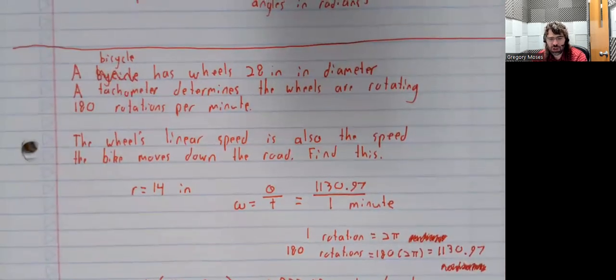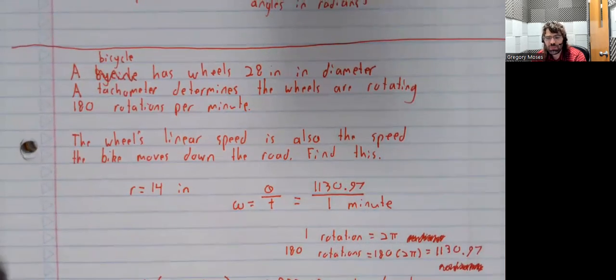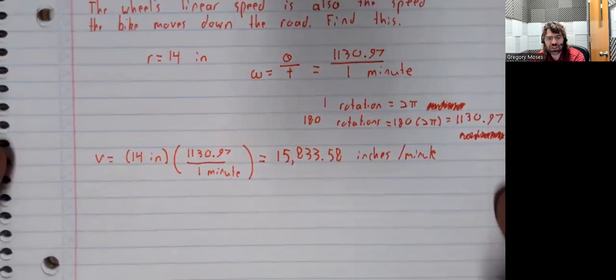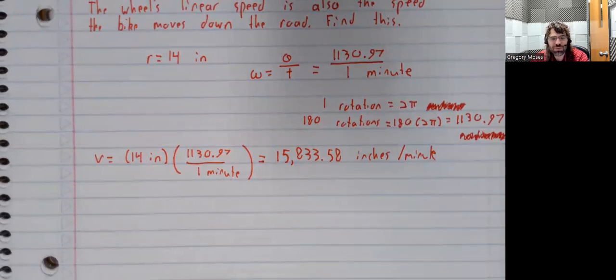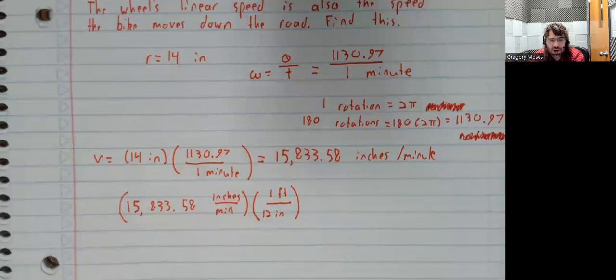Now, this problem doesn't tell you what unit your answer should be in, but I hope we can agree that inches per minute might not be super helpful. So, let's convert it into something more familiar there. Ordinarily, when we're talking about a vehicle's road speed, we're going to want to talk about miles per hour. We could, I suppose, just go to Google and look up how many inches there are in a mile. But we'll do it the slow way.